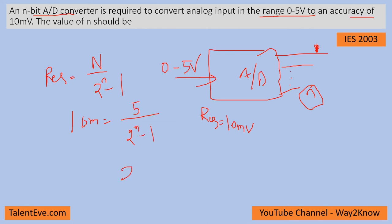10 millivolts comes here, it becomes 0.5, which is nothing but 500. So 2 power n is equal to 501.